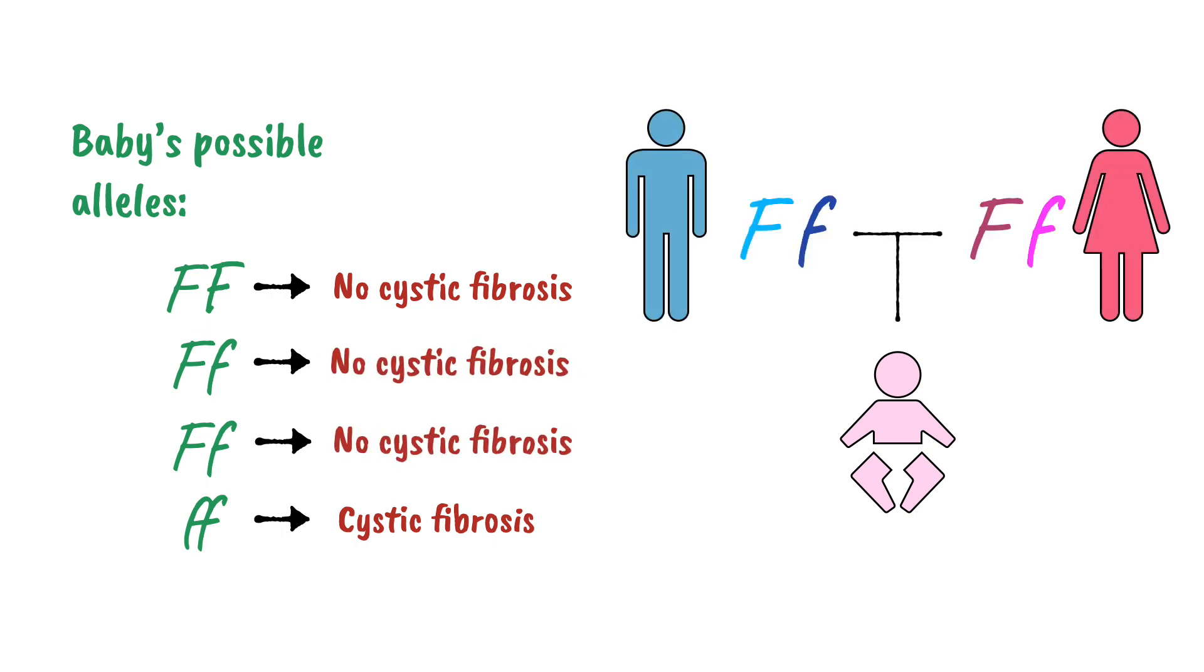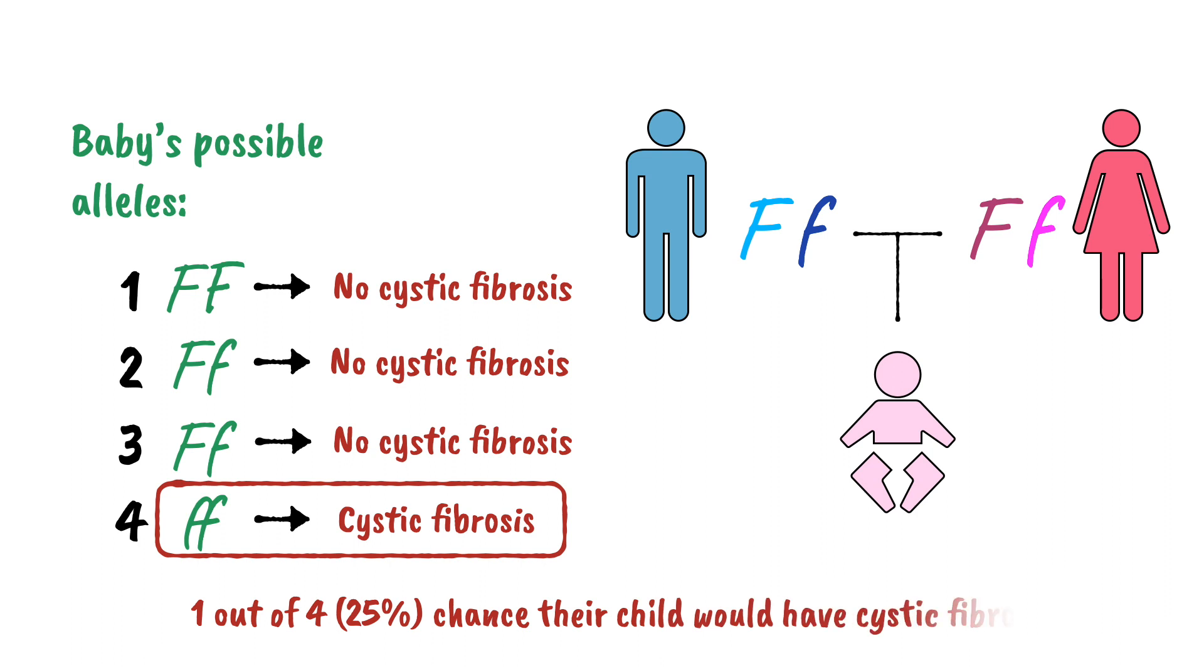If these two parents with these particular alleles were to have a baby, there is a one out of four or 25% chance that their baby would have cystic fibrosis. It's really important that you're able to draw genetic diagrams to determine these kinds of probabilities with inheritance. How to do that is all covered on this next video, along with some really important vocabulary. I'll see you guys there.